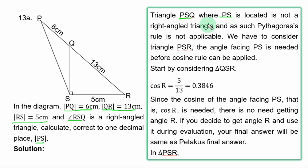And as such, Pythagoras rule is not applicable. We have to consider triangle PSR. The angle facing PS, that is angle R, is needed before cosine rule can be applied.